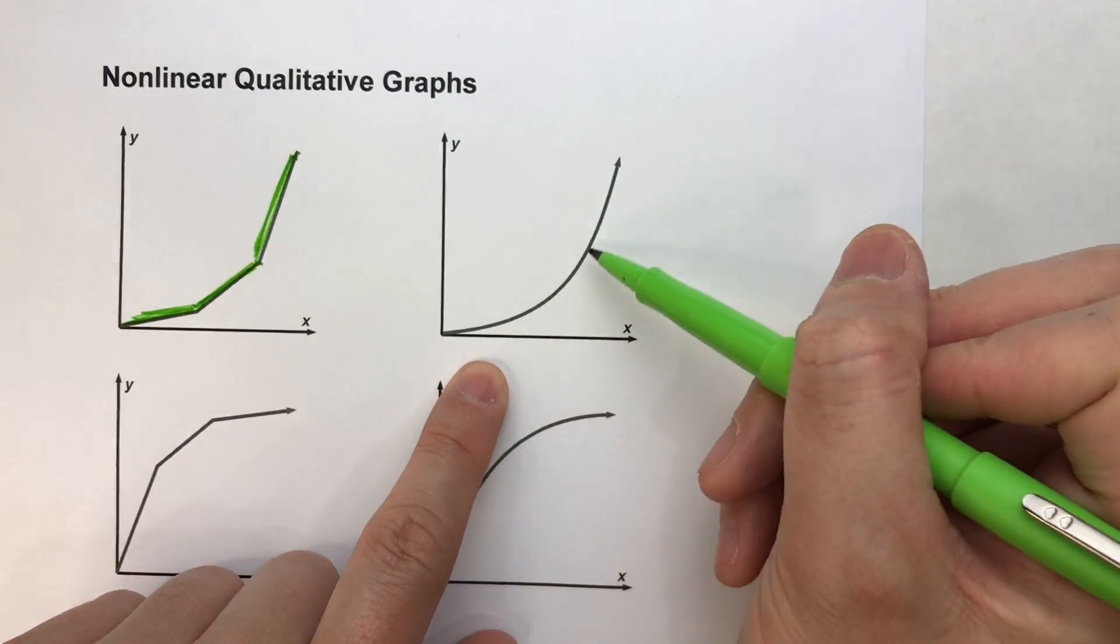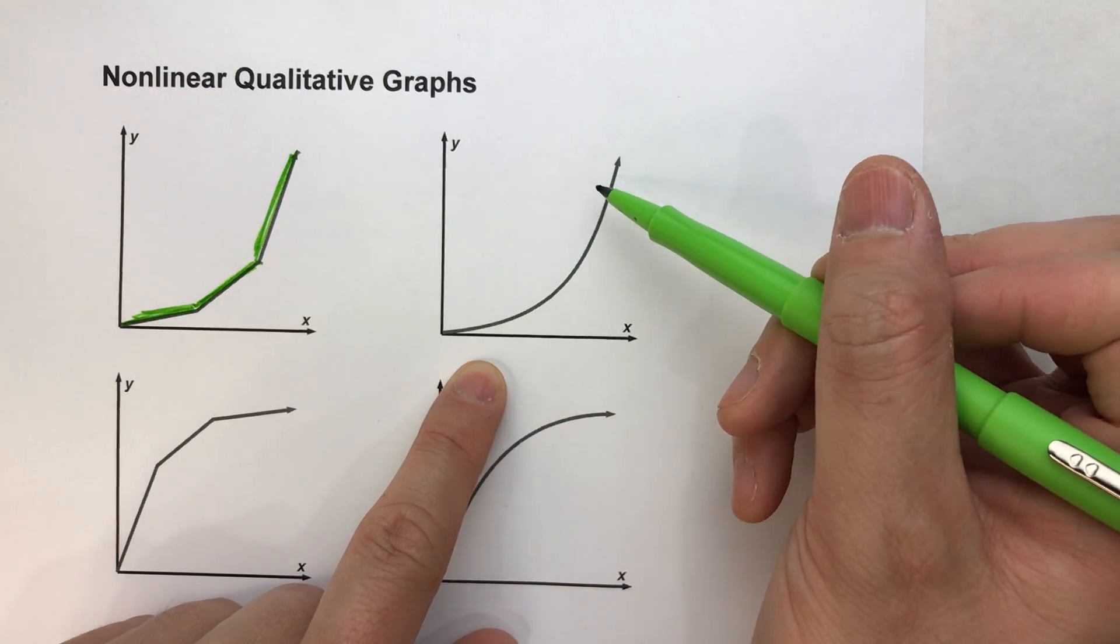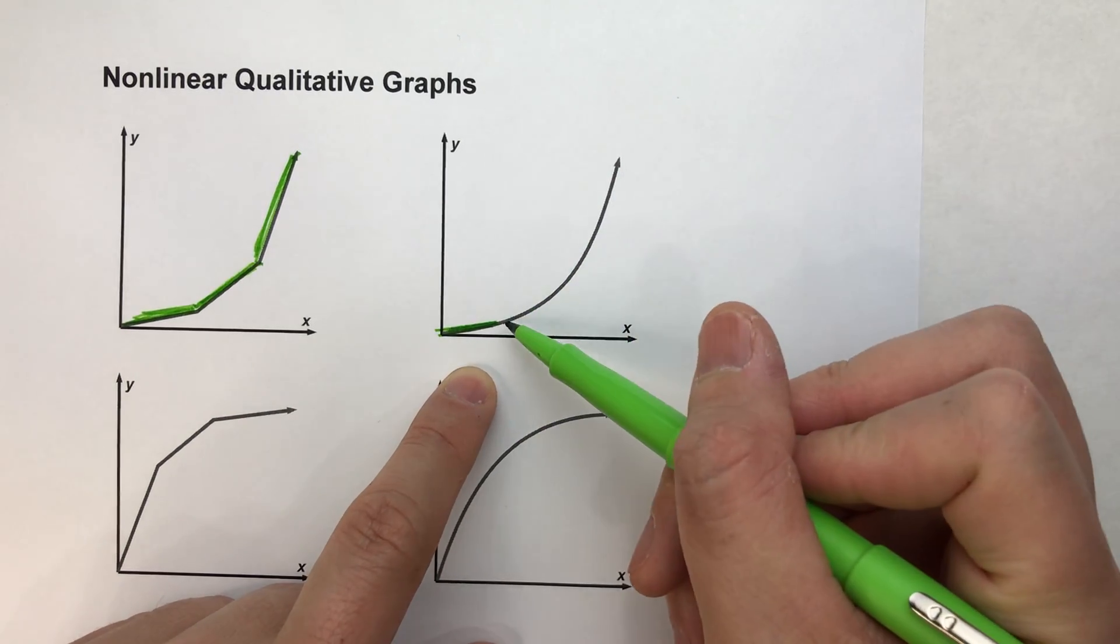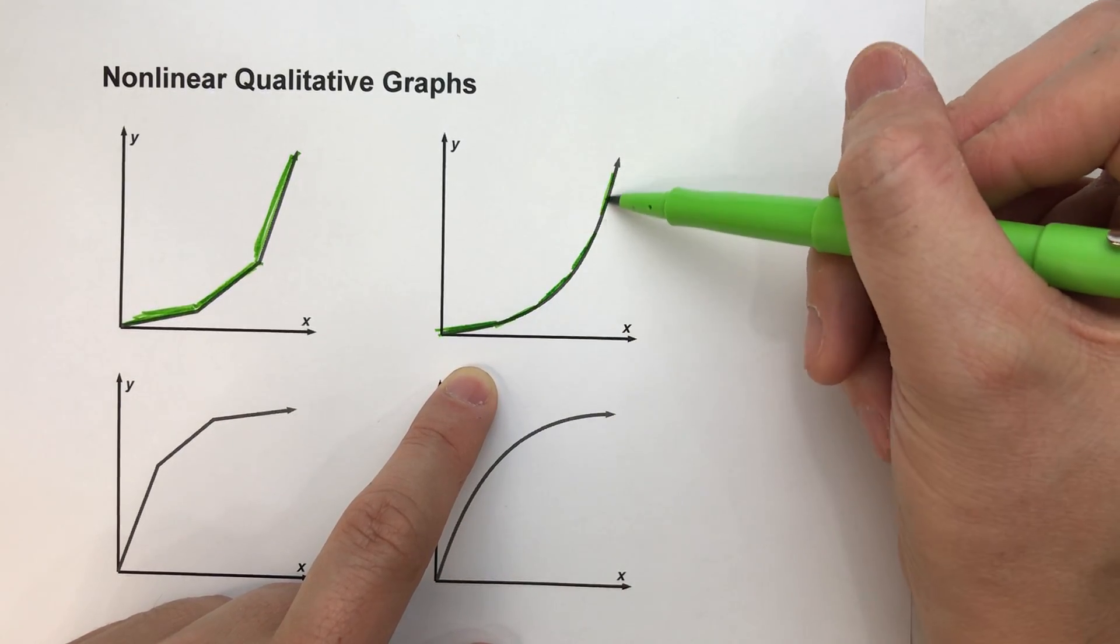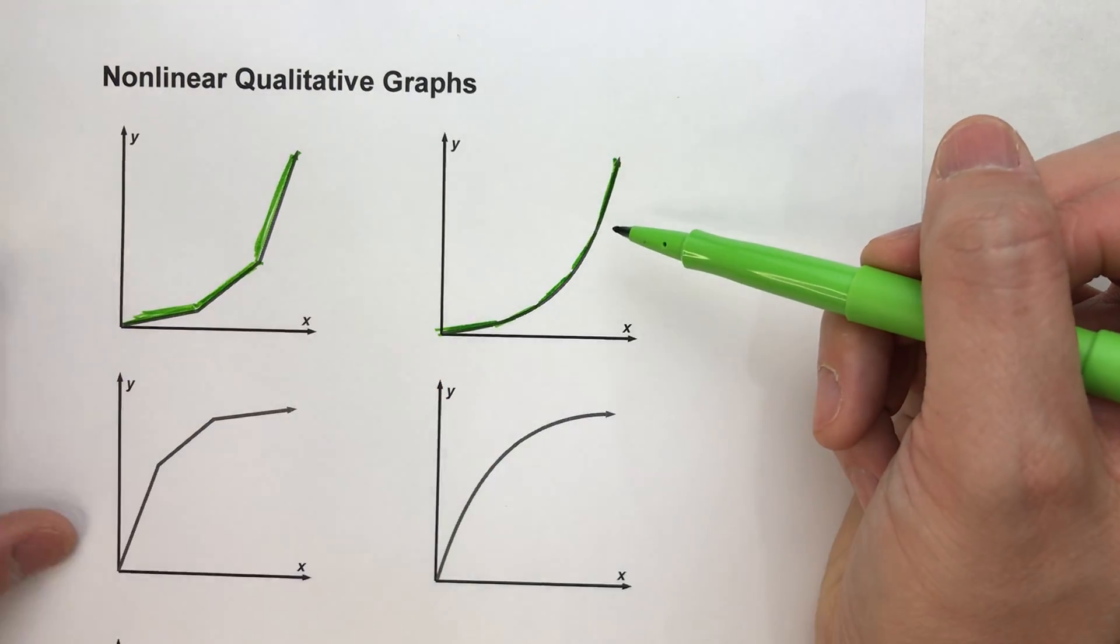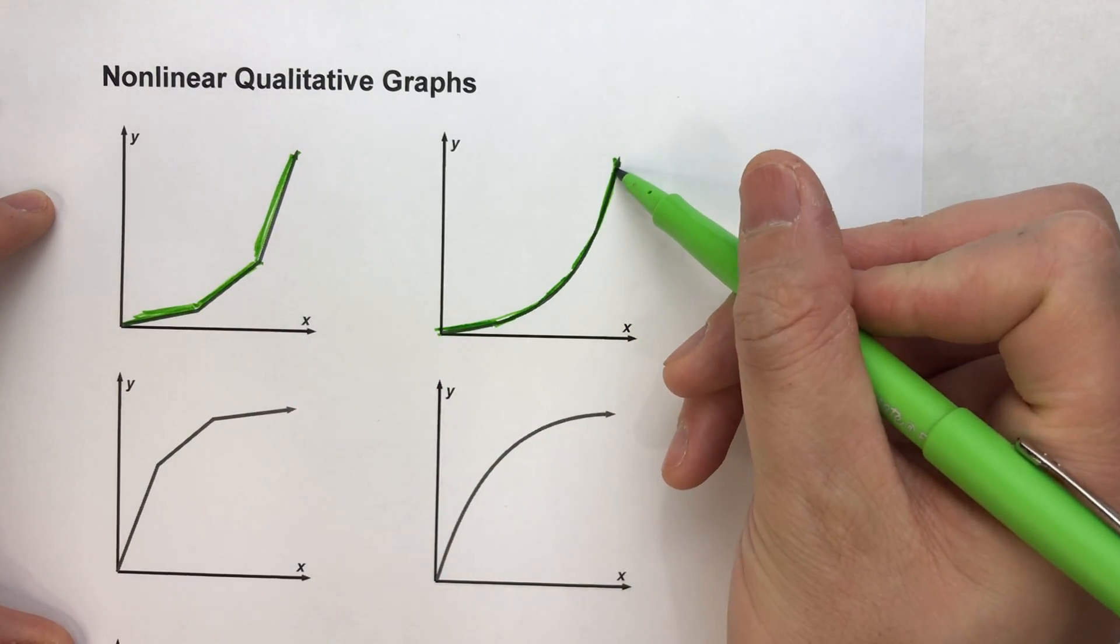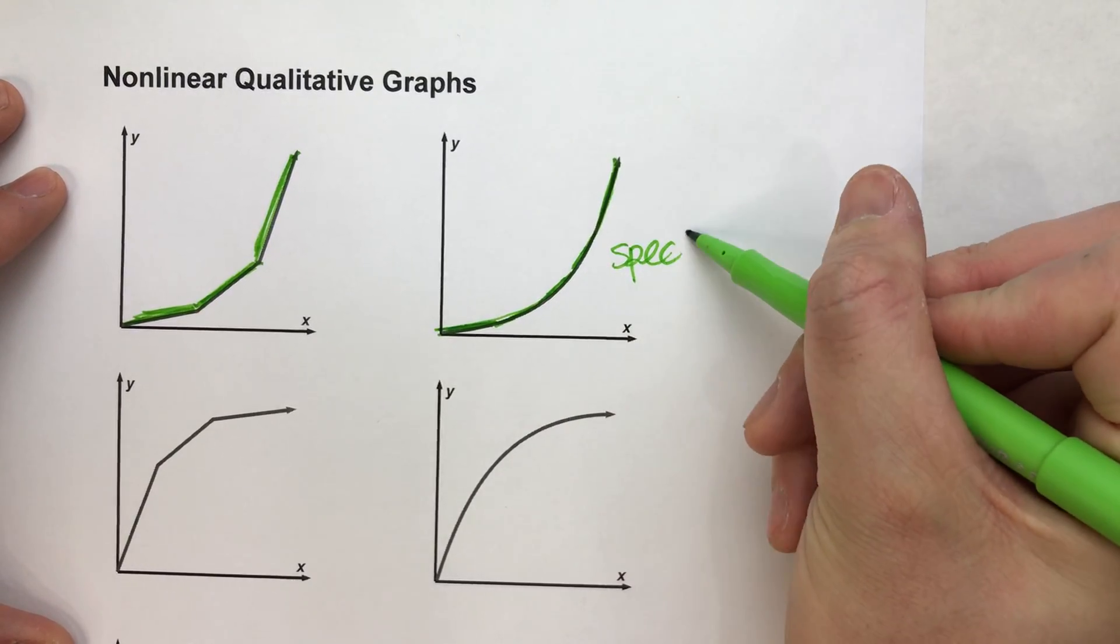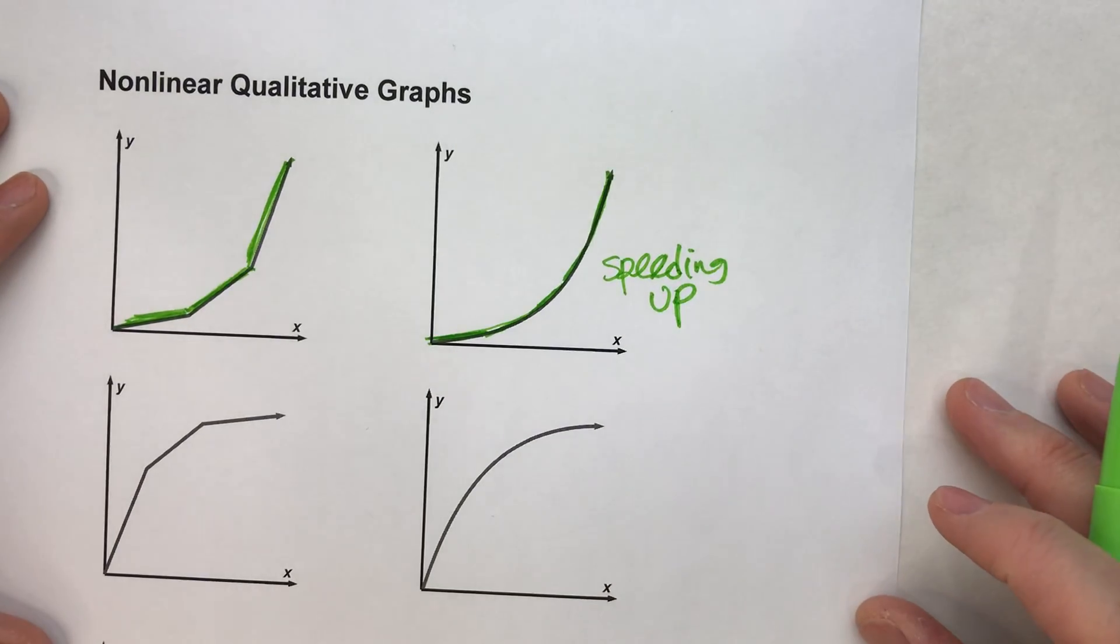Now that's basically what this curve is showing. So notice at the beginning it starts off pretty flat, then it gradually gets steeper, steeper, steeper, and then at the end it's pretty steep. So when you see a curve like this it represents that the rate is speeding up. It's getting faster.